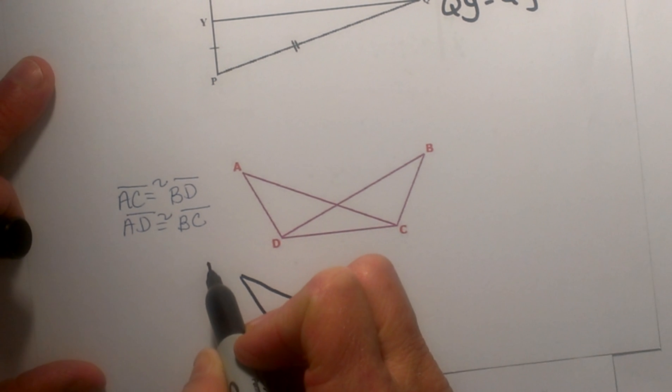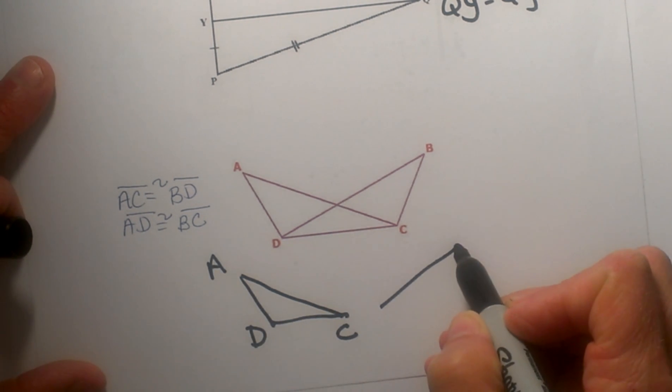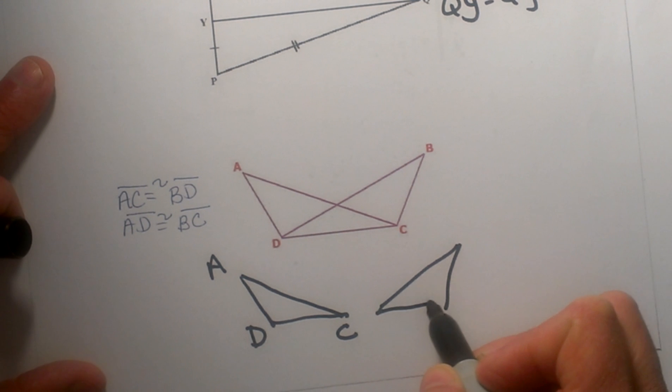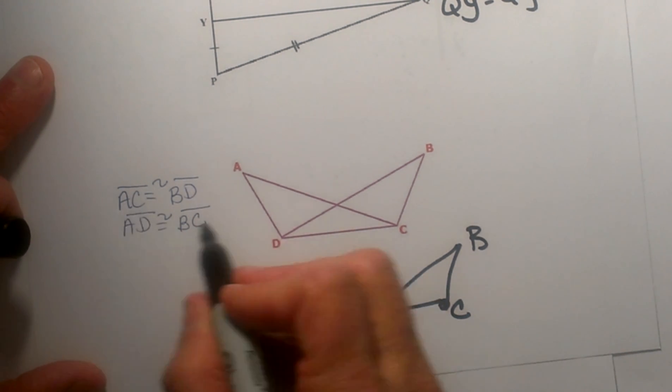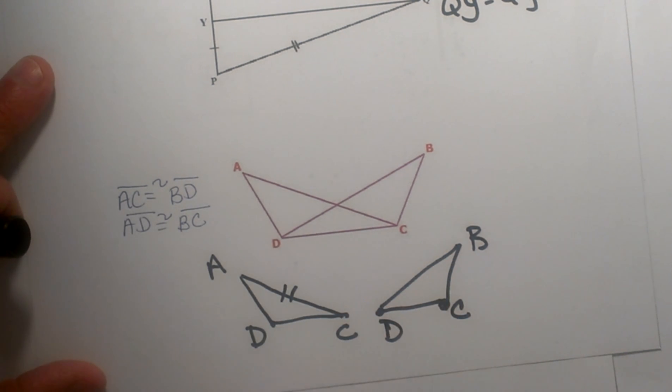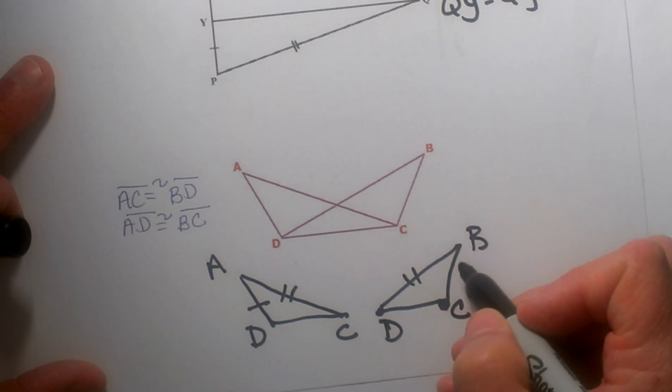I am going to draw ADC over here—and mine is not to scale—but you can see I am going to draw BCD and I am going to mark these parts congruent. Okay, AC, that is this one, that is congruent to BD, that is this one, and AD is congruent to BC.